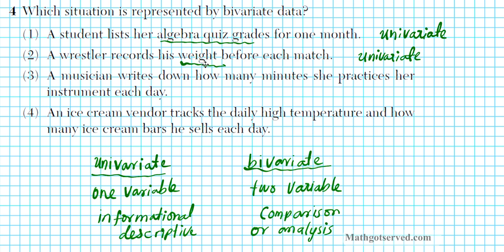This is just informational purposes here. A musician writes down how many minutes she practices her instrument each day. This is univariate also. Why is that? The only variable here is the number of minutes she practices. Is he comparing it with anything else? No, that's the only data that's being collected here. Four, an ice cream vendor tracks the daily high temperatures and how many ice cream bars he sells each day. What do you think this is? This is bivariate.